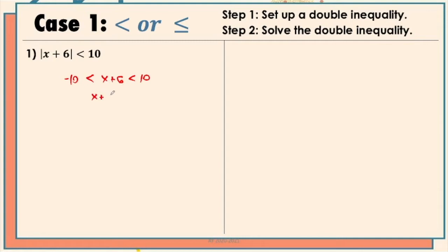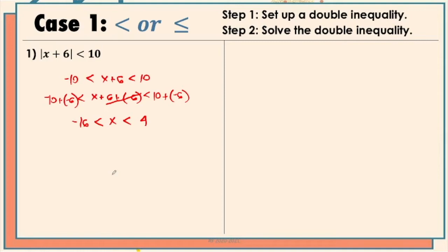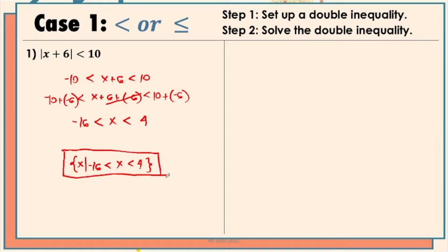The middlemost section would now become simply x; the right side gives us positive 4, but the left side gives us negative 16. To express the final answer in set builder notation, we have the set of x such that x is less than positive 4 but greater than negative 16. This means the possible values that make the inequality true are all numbers between negative 16 and positive 4, not including negative 16 and positive 4.